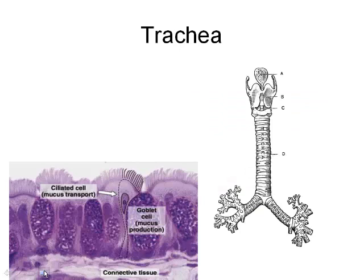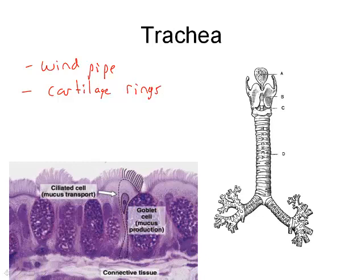The trachea is our windpipe. It has cartilage rings around it — you can feel them if you touch the front of your throat. There is also mucus and cilia in the trachea: the mucus traps debris and the cilia sweep it up the trachea into the oral cavity where we swallow it.